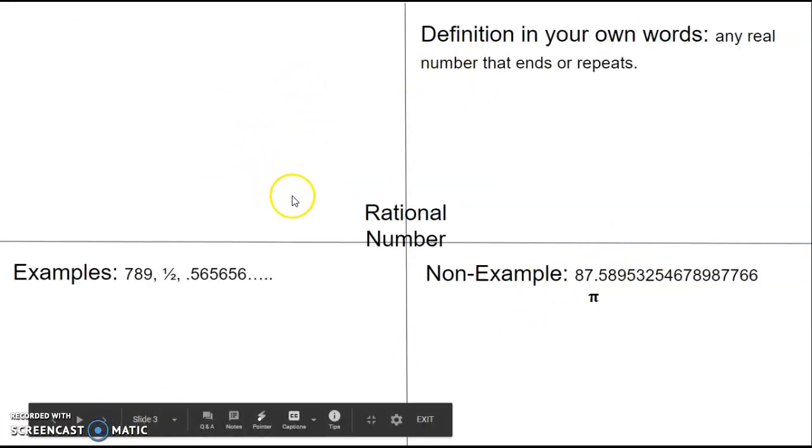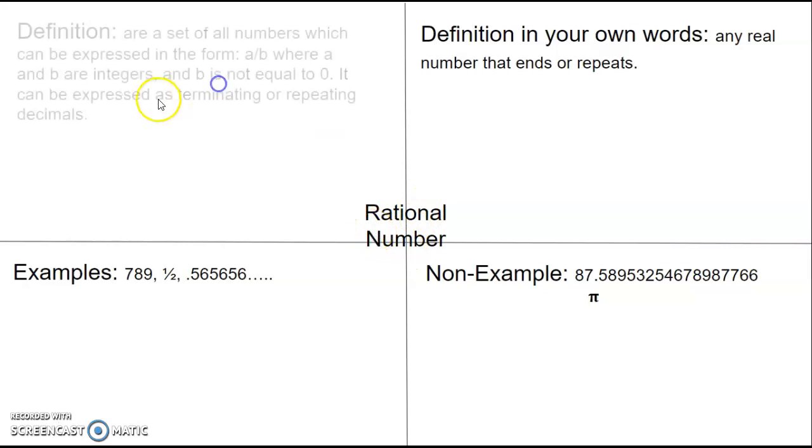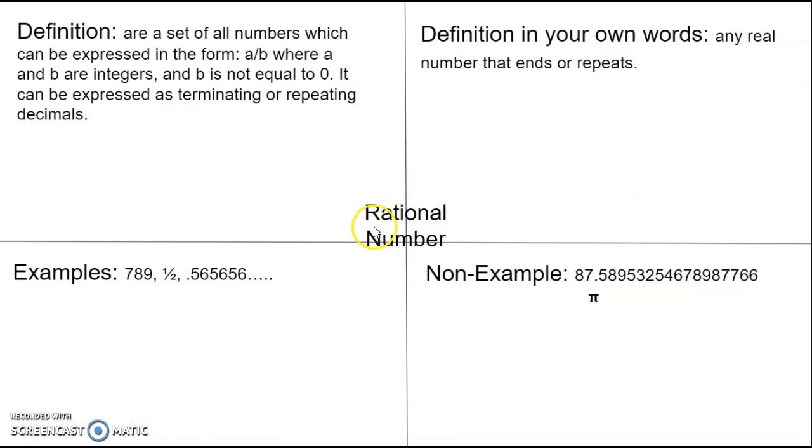So I provided an example on this slide. Rational number, I use as an example. It's something we'll learn about a little later. But you can see this definition is really complex. So are a set of all numbers which can be expressed in the form a over b where a and b are integers and b is not equal to zero. It can be expressed as terminating or repeating decimals.